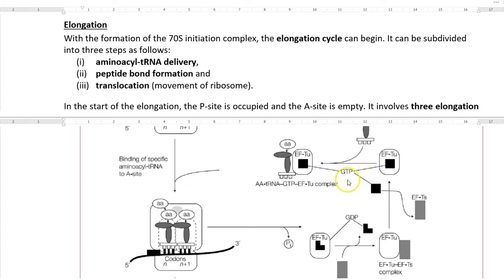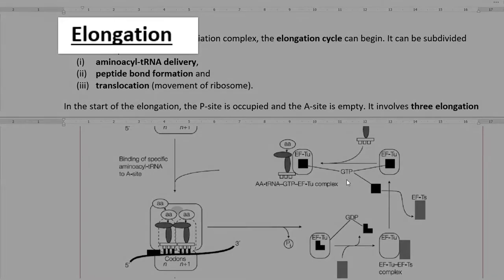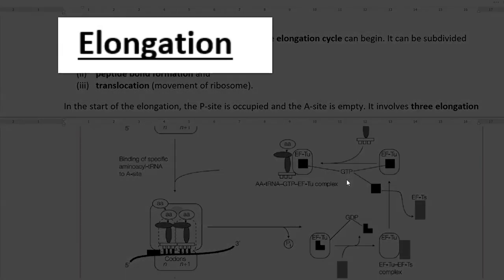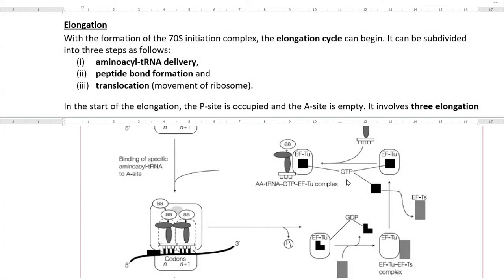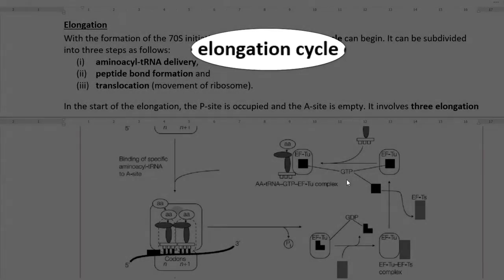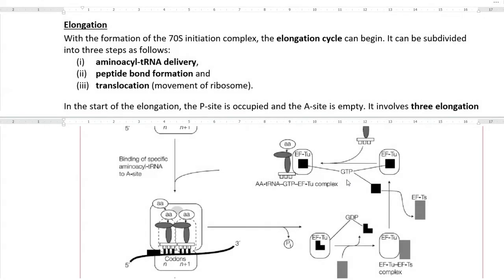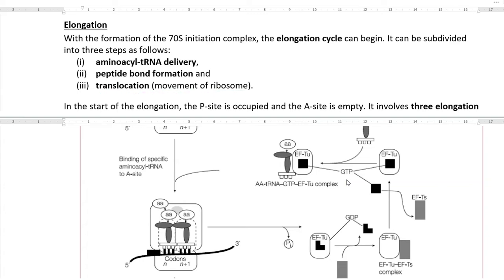Dear students, in this screencast video lecture, we are going to see the points related to elongation of the translation process. With the formation of a 70S initiation complex, the elongation cycle will be starting. This elongation cycle is further divided into 3 steps that includes aminoacyl tRNA delivery, peptide bond formation, and the third one is translocation, which means movement of the ribosome.